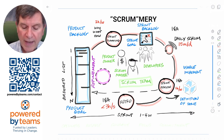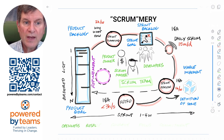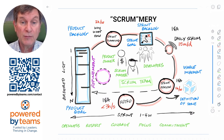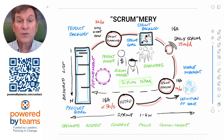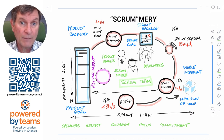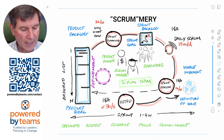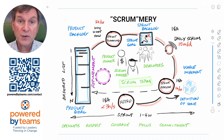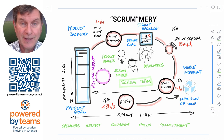All of that is underpinned by the five values of openness, respect, courage, focus, and commitment, as well as transparency, inspection, and adaptation. That's everything in Scrum in one diagram — covered in eight minutes and thirty seconds.